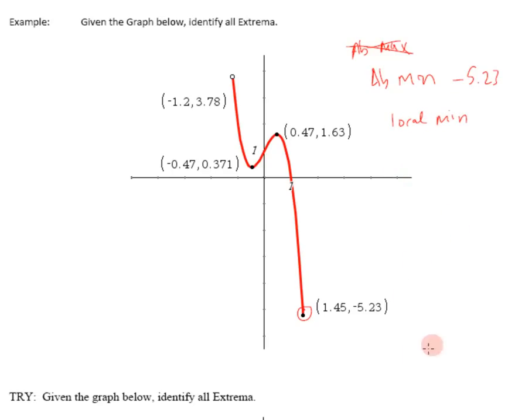Now remember, local minimums have to be around your neighborhood. So you've got to be able to look left and right or up and down. If I'm here at that end point, I can look up, but I can't look down. There's nothing down here. So this would not be a local minimum in this case.